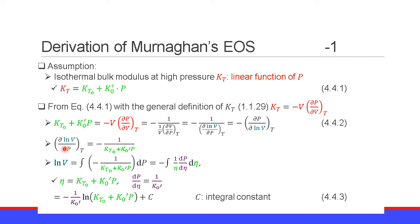Then we have the partial derivative of the natural logarithm of volume at temperature T equal to minus 1 over (KT0 plus K0' P). We then integrate this equation. The natural logarithm of volume V is the integral of minus 1 over (KT0 plus K0' times P) with respect to pressure P. By defining the parameter eta as KT0 plus K0' P, this integral becomes minus the integral of 1 over eta.